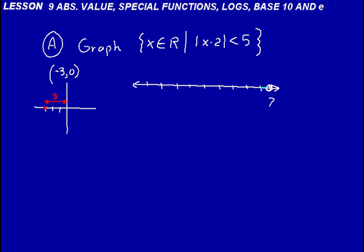So we can go ahead and start shading in. We're at 7, 6, 5, 4, 3, 2. That's a distance of 5, isn't it? We've gone 1, 2, 3, 4, 5 units. So we can shade that region in right there, and this is 2 right here, 3, 4, 5, 6.